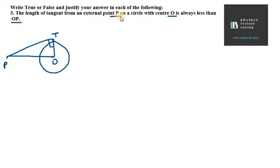Length of tangent from an external point P on a circle with center O is always less than OP. That means the tangent, the length of tangent, it is less than OP. Let's see how to prove this. First we know that angle OTP is 90 degrees,